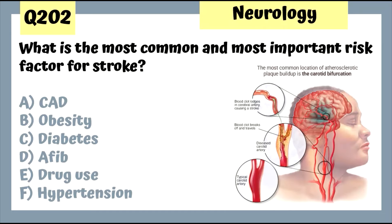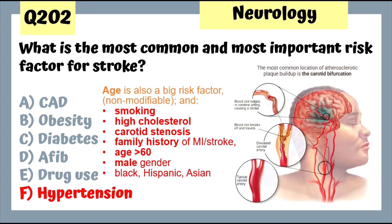What is the most common and most important risk factor for stroke? The answer is hypertension. Hypertension is a modifiable risk factor for stroke and it's the most common and most important. Of course age is also a big risk factor but it's not modifiable. You can look at these other risk factors for stroke, but again hypertension is the most common and most important.